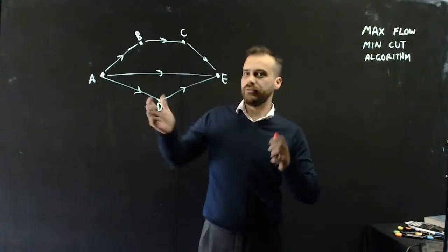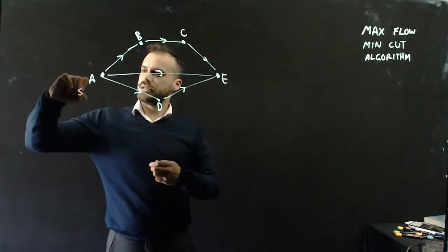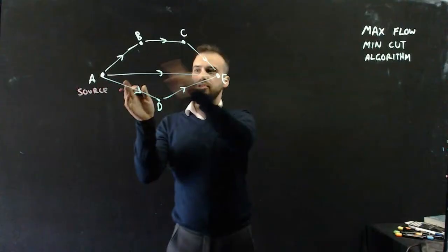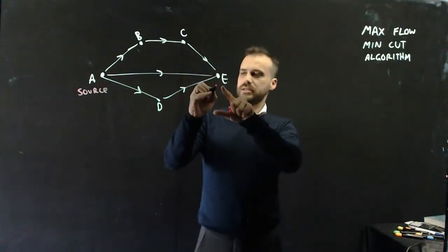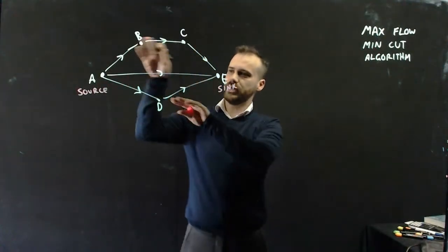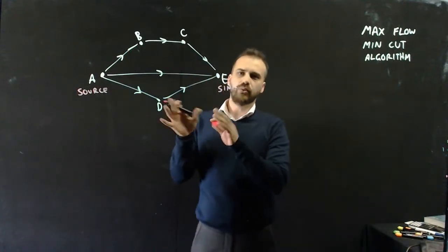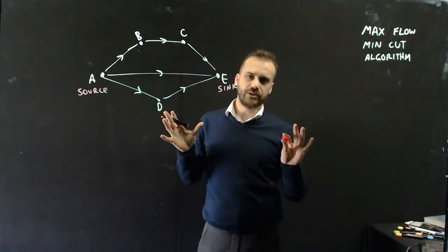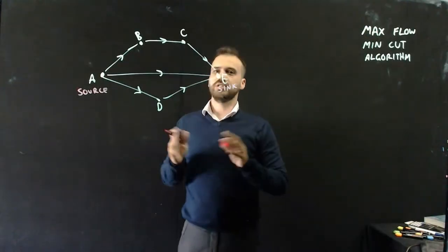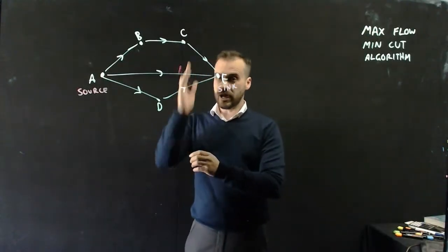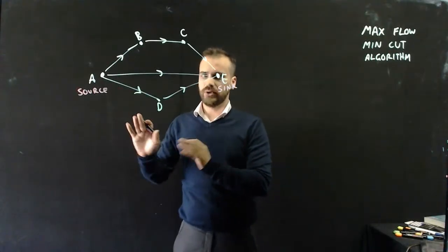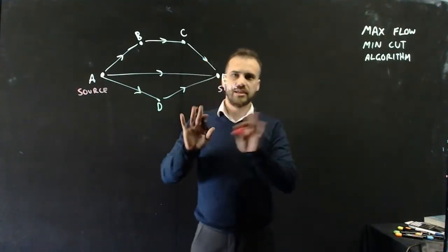This is my flow network. Remember, this is my source because edges are moving away from it, and this is my sink because everything's flowing in towards it. I haven't put weights on it because I don't need weights to show you what a cut is. So what's a cut? A cut cuts the network so that the source is on one side and the sink is on the other.